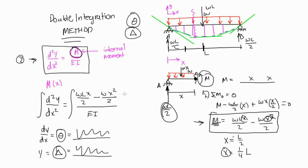When we integrate indefinitely — without limits — we end up with constants C1, C2, etc. To find those constants, we use boundary conditions. Boundary conditions are statements about the diagram that help us find the constants. For example, at A we have a pin, so at x = 0 the deflection y = 0, because there's a support and assuming no settlement.